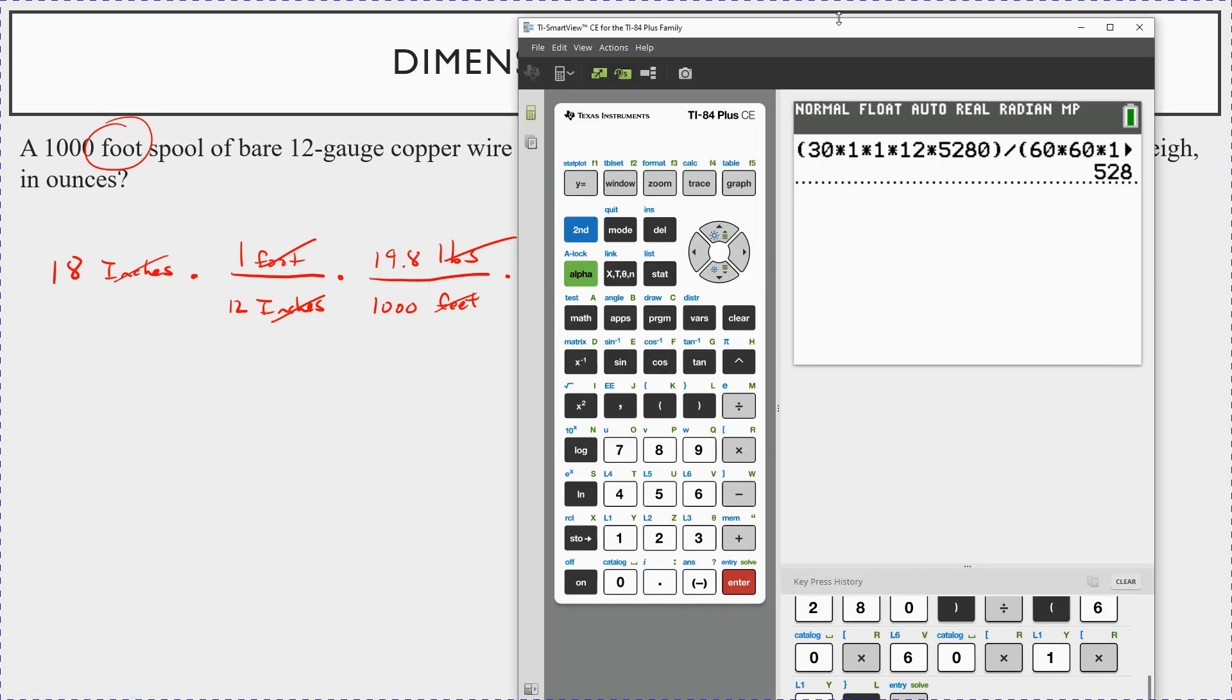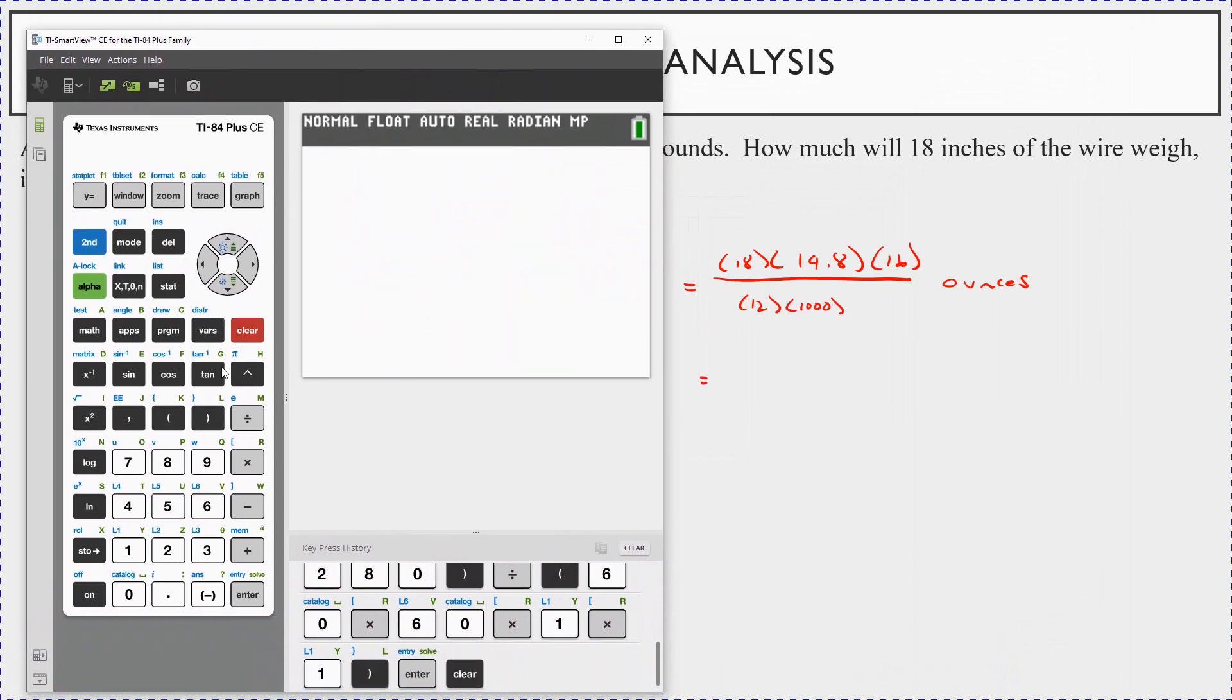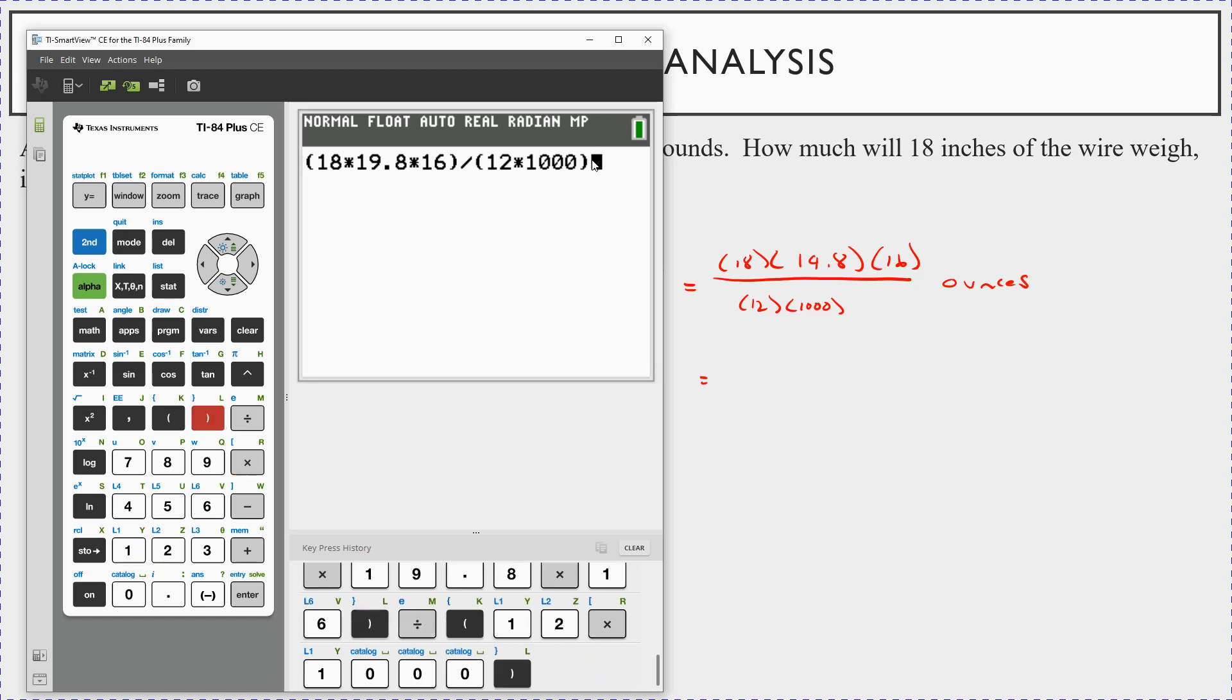So remember your parentheses. So 18 times 19.8 times 16. Close your parentheses. Divided by, start a new set of parentheses. 12 times a thousand. Close the parentheses. Make sure if you just do divided by 12 times a thousand, you won't get the right answer. So you have to make sure you put that in parentheses there. Look at this. This is the answer. It's 0.4752 ounces. So not a lot.